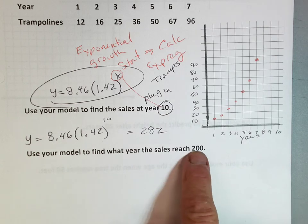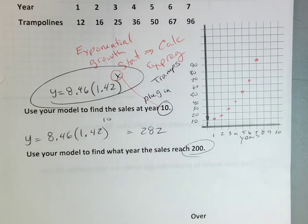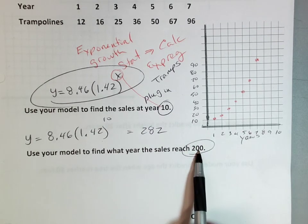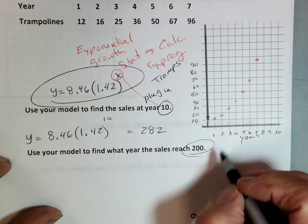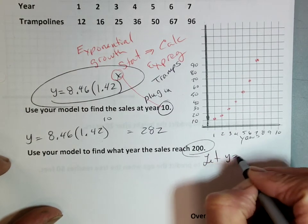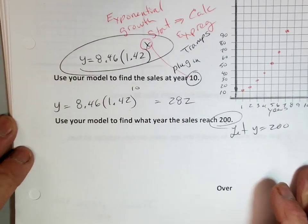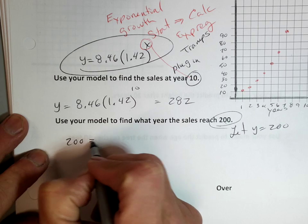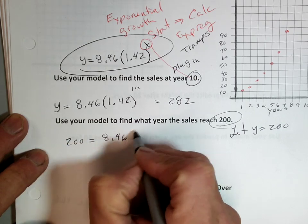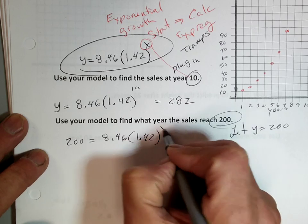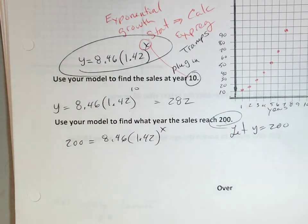Now somebody might say, hey, when did you guys reach 200 per year? Well, how did I get to 200? So 200's got to be the number. That's got to be my y value. So we're going to set y equal. We're going to let y equal 200. So in my equation, I'm going to go 200 equals 8.46 times 1.42 to the x power. And I'll step back and let you catch up.